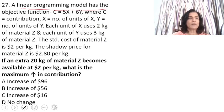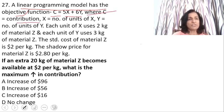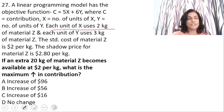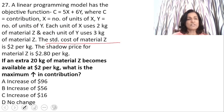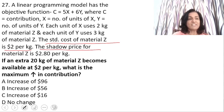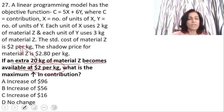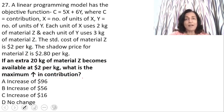Moving to the next question: a linear programming model has the objective function C = 5x + 6y, where C is the contribution. Each unit of X uses 2 kg of material Z and each unit of Y uses 3 kg. The standard cost of material Z is $2 per kg. The shadow price for material Z is $2.80 per kg. An extra 20 kg of material Z becomes available at $2 per kg — the existing rate. What is the maximum increase in contribution?